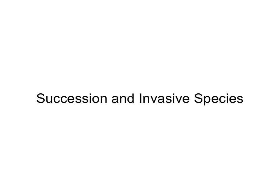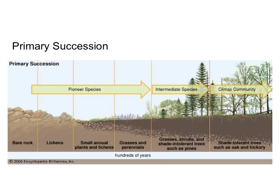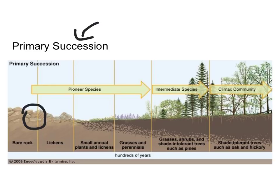Now we're going to switch gears and talk about succession and invasive species. Succession is basically the order in which organisms will colonize an area, and there are two types: primary succession and secondary succession. Primary succession occurs on land that has no soil and no living organisms — such as after a volcanic eruption creates new rock, or a new island forms from a volcano. Pioneer species like lichen and mosses come in, live on the rocks, break them down, and form soil.